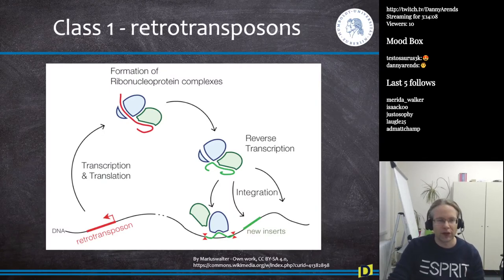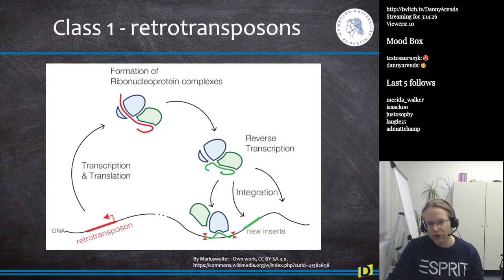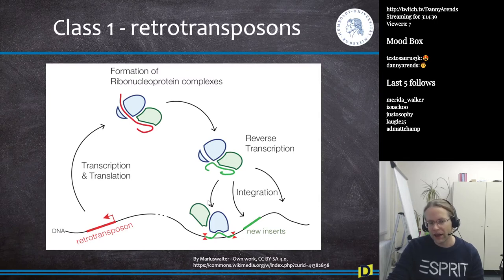Here's a picture of a retrotransposon. The retrotransposon is transcribed and translated into proteins, then a ribonucleoprotein complex is formed. This complex includes a reverse transcriptase, which converts the RNA intermediate back into DNA. That DNA then integrates into the genome, potentially disrupting different genes at various positions.